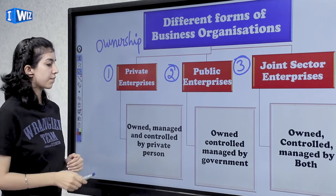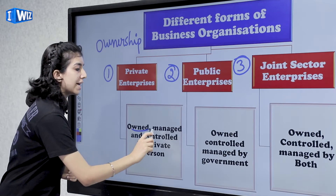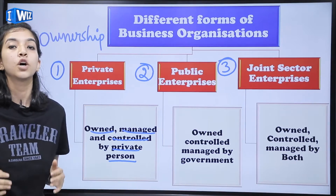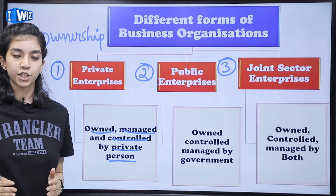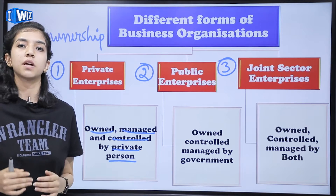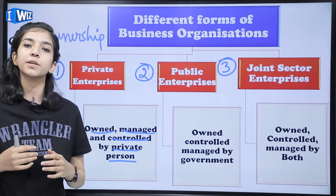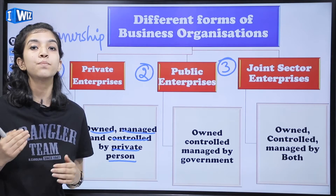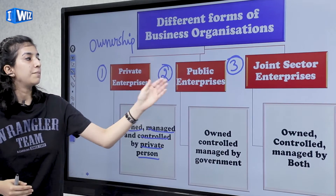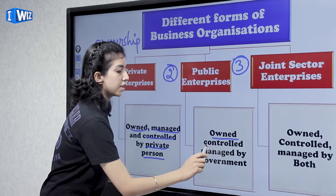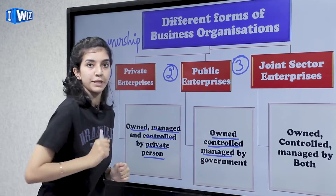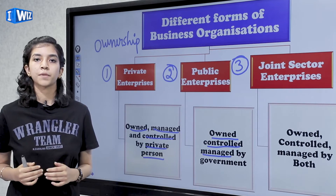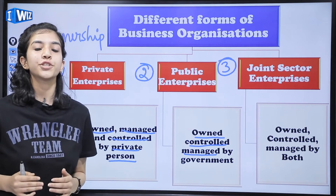When ownership is different, we have three types of enterprises. First, private enterprises — which are owned, managed, and controlled by private persons. Here, ownership, management, and control belong to private individuals; it can be one person or many. For example, Apple is a private enterprise. Second, public enterprises — these are owned, controlled, and managed by the government.